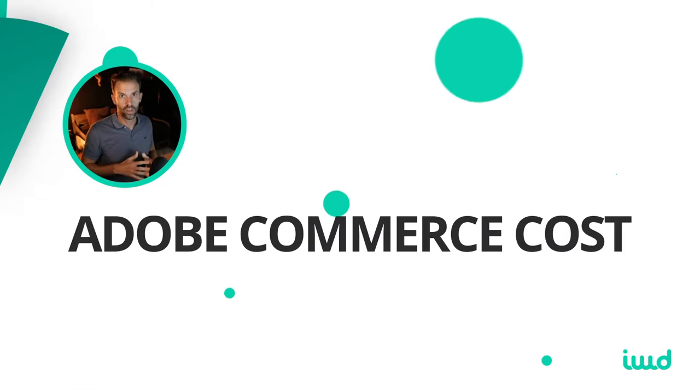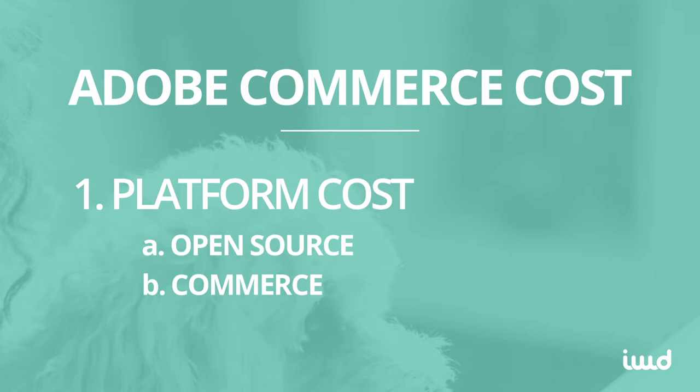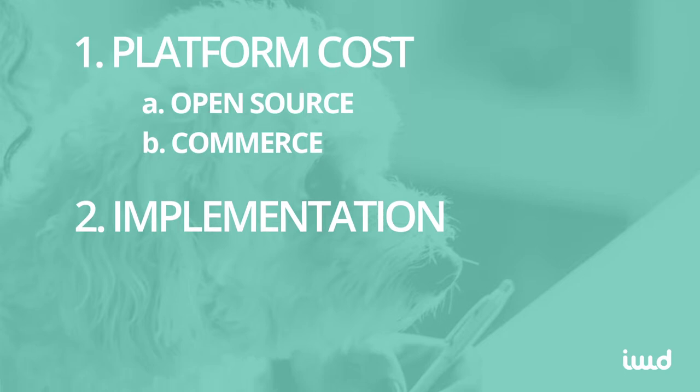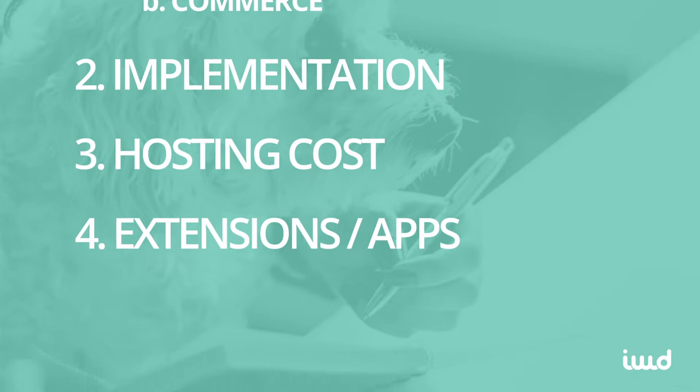We'll start with the platform's cost — what's the difference between open source and commerce. Next, we'll go over implementation of your solution and the average price. Third, we'll go over the hosting cost. Fourth, we'll go over the extensions and apps cost. And lastly, we'll go over the cost of maintenance and upgrades. We also have ways to save over $30,000 with your Adobe Commerce implementation, so make sure to stay tuned for those.